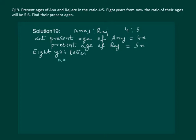Then the age of Anuj will be 4x plus 8. He will get 8 years older. And age of Raj will be 5x plus 8.